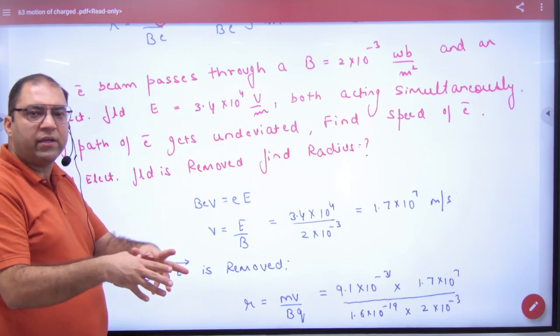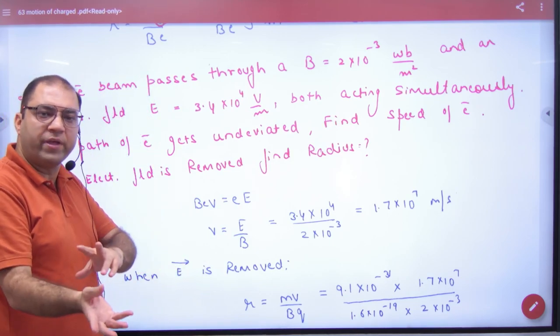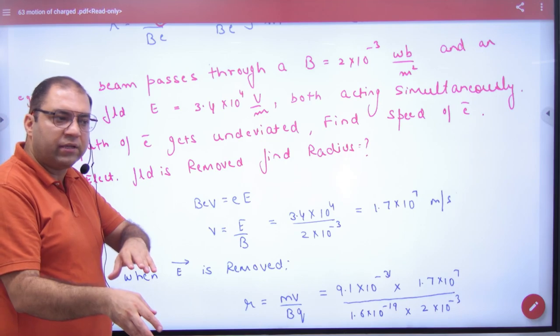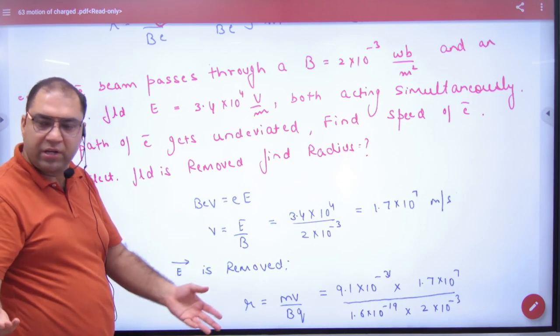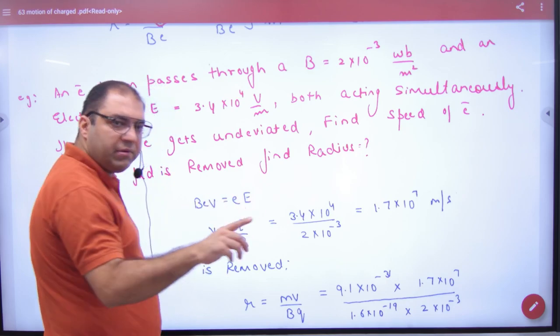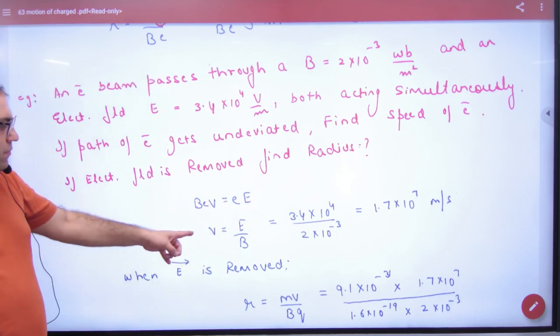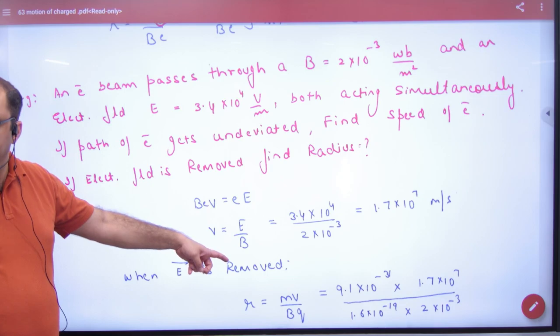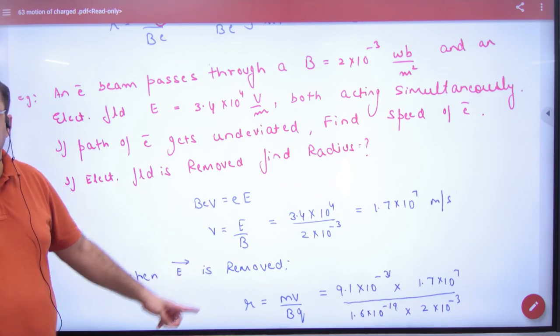Now magnetic field wants to go in a circle. Electric field wants to go in a parabola. But it is undeviated. Electric field's force is exactly the same. We had last case done. So what is velocity in that case? E upon B. So straight formula, E knows B knows velocity.